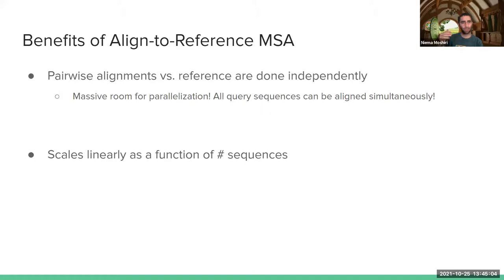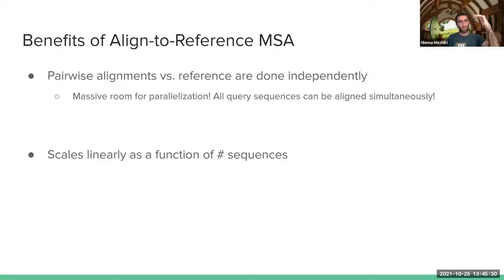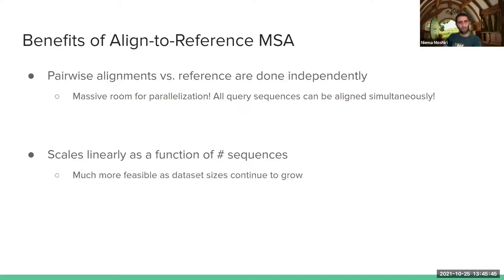Another benefit is that this approach scales linearly as a function of the number of sequences. Each pairwise alignment against the reference takes O(k²), but k is fixed — it's always going to be 29,000 for COVID-19. If I double the number of genomes, I just do twice as many pairwise alignments, so it takes twice as long. This scales linearly with how many sequences I have, making it much better for a rapidly growing pandemic like COVID-19.